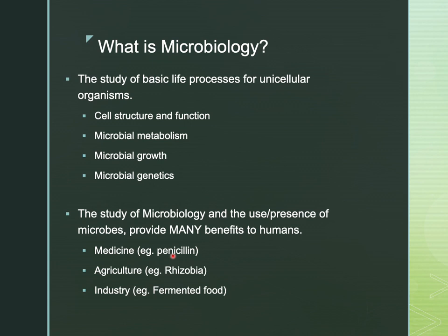We'll also talk a lot about microbiology in terms of its uses and benefits to humans — in the realms of medicine, agriculture, and industry. In medicine, the example here is penicillin, which actually comes from penicillium mold. In agriculture, the example is rhizobia, a nitrogen-fixing bacteria associated with plant roots, important for the nitrogen cycle. In industry, the example is fermented food — beer, wine, cheese, yeast in baking, and yogurt with live and active cultures. Microbes are also important for food preservation, safety, processing, and storage.